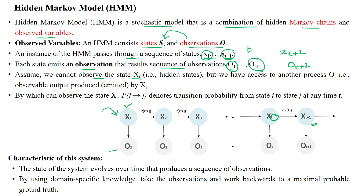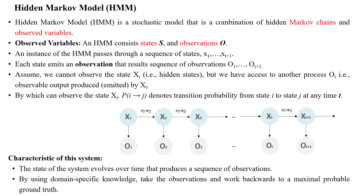But we can access the observation which is emitted by this particular state. That means we can access the output of the state generated by the corresponding state x1, but we cannot directly access the hidden state's values. However, we can observe the hidden state x_t by using the transition probability from state i to state j, which denotes the transition probability from state i to state j at any time t.